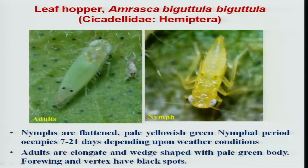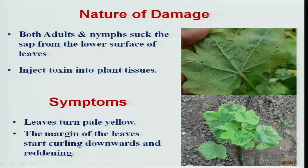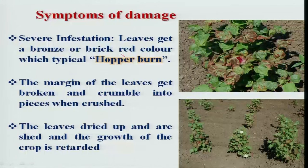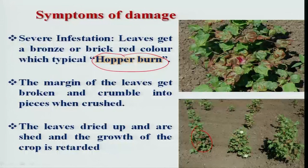Leafhopper, also called jassids, occurs throughout India — south, central, and north. Both adults and nymphs cause much damage. The characteristic symptoms include margins of leaves curling downwards and reddening, ultimately leading to hopper burn, which in severe cases can even cause death of the plant.